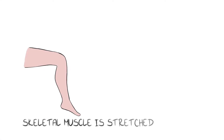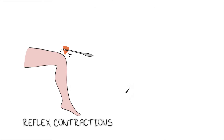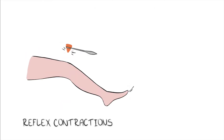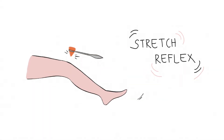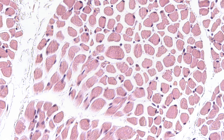When a skeletal muscle is stretched, for example a muscle of a leg, it normally undergoes reflex contractions, known as the stretch reflex. This response is initiated by the muscle spindle.